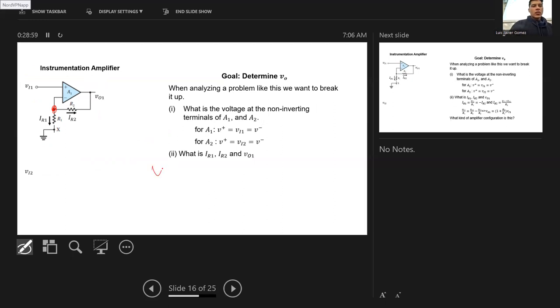Vi1 divided by R1 plus Vi1 minus V01 divided by R2 equals 0. Can anyone tell me what the gain is at this point? Does this look similar to any of you?